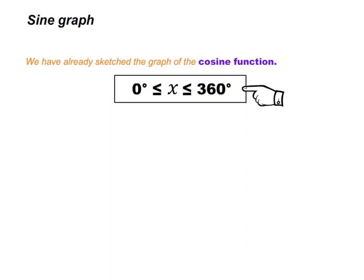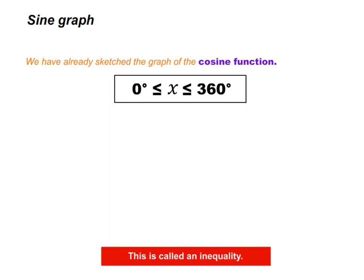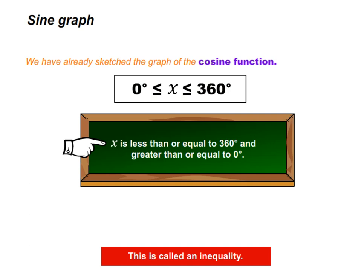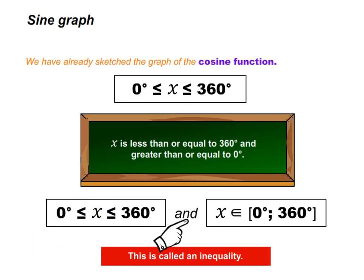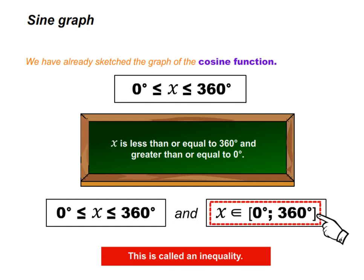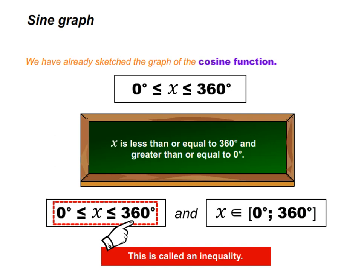This is called an inequality. It is read like this: x is less than or equal to 360 degrees and greater than or equal to 0 degrees. It is important to know that 'x is less than or equal to 360 degrees and greater than or equal to 0' and 'x is an element of 0 degrees and 360 degrees' mean the same thing.